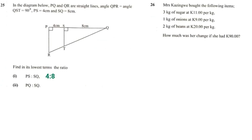So we're going to divide 4 by 4, which will give us 1. Okay, 8 divided by 4 will give us 2. So now we have written the ratio in its lowest form, which is 1 to 2. Okay, so that is the ratio of PS to SQ.